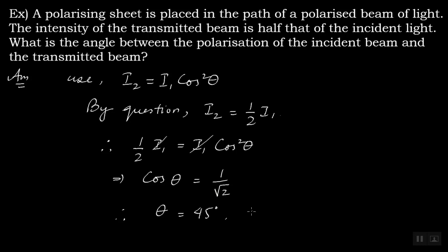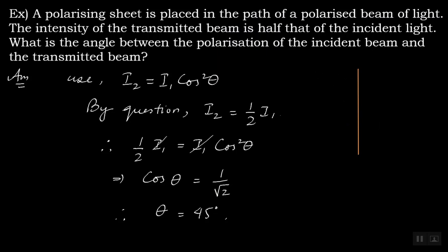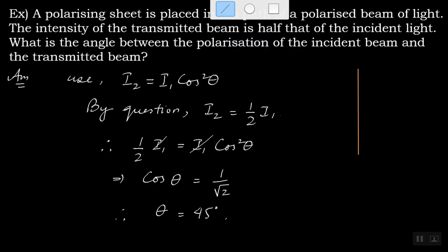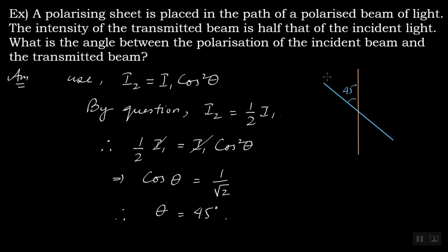So what does this mean? If this is the transmission axis of the polarizer, and you rotate the transmission axis of the analyzer by 45 degrees, then the light that enters your eye will be half the intensity of the light incident on the analyzer.